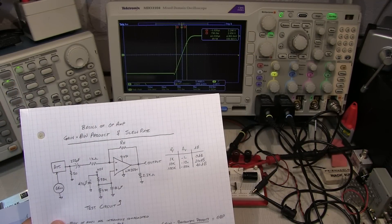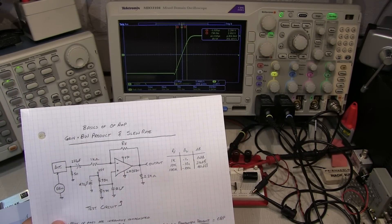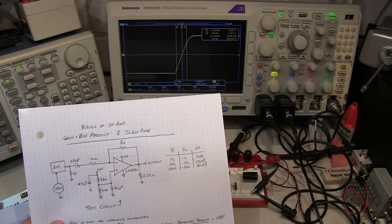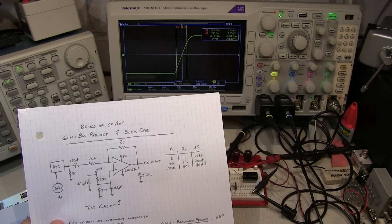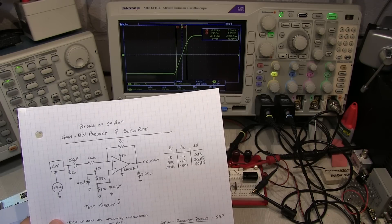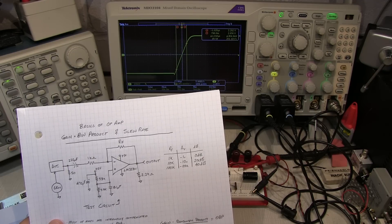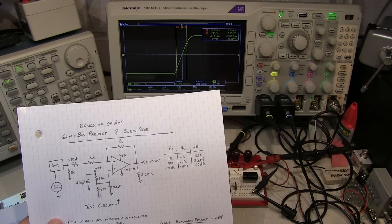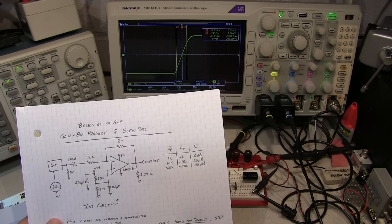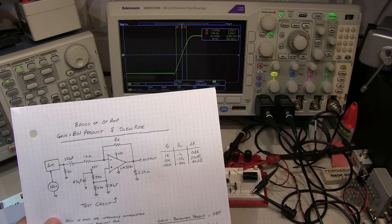So I hope you learned a little bit about what's meant by gain bandwidth product and slew rate and slew rate limiting, and how either of these things might determine the ultimate frequency response of your op amp stage. Thanks again for watching. Please subscribe if you haven't done so already, and we'll see you next time.